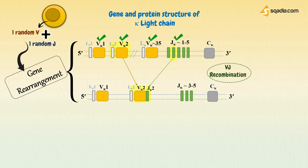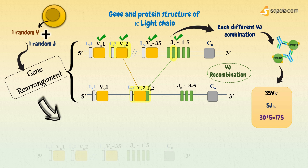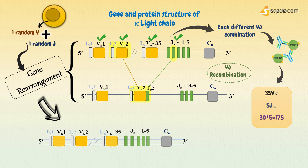As each V and J segment has unique nucleotide sequences, each combination of V and J gives rise to a variable region protein with a slightly different amino acid sequence, giving different antigen binding capacity. In quantitative terms, since there are 35 V kappa genes and 5 J kappa genes, the number of combinations is 35 multiplied by 5, equal to 175. Therefore, this mixing and matching gives 175 combinations.